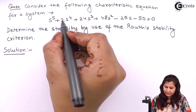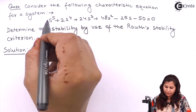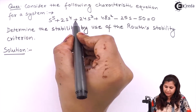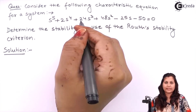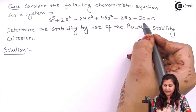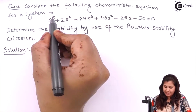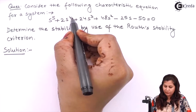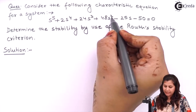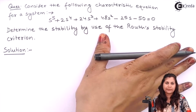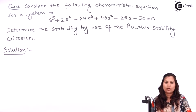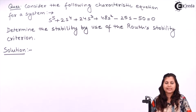First we will see whether any coefficient is missing from this characteristic equation. We have S5, S4, S3, S2, S1, S0 — all the coefficients are present. So no coefficient is missing or absent from this characteristic equation.